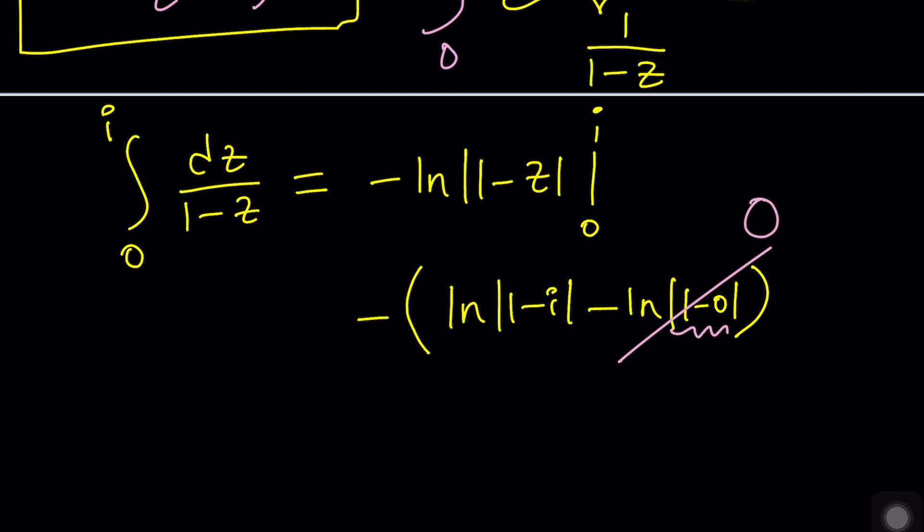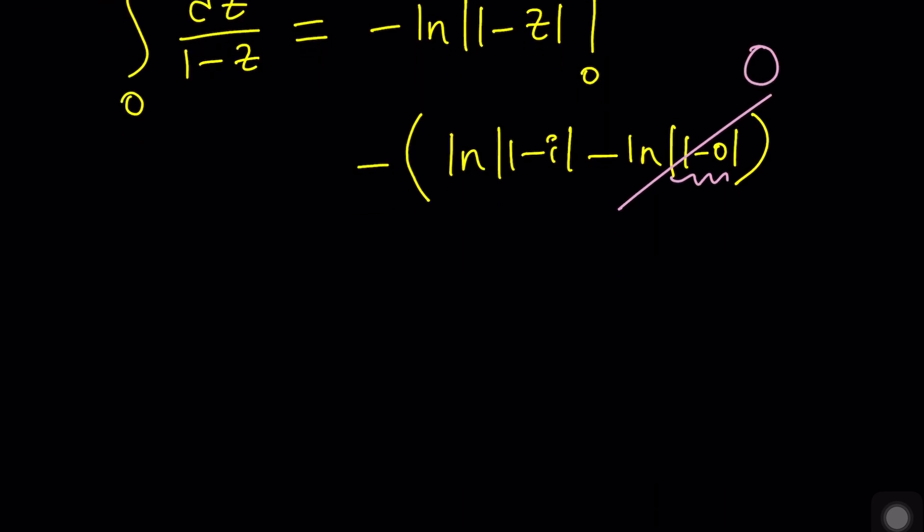Yay, we end up with something like this. So i plus i squared over 2 plus i cubed over 3 dot dot dot is equal to negative ln 1 minus i. What happened to the constant? This is a definite integral so we don't have a constant. Make sense? Beautiful. But is that the answer? Yes.